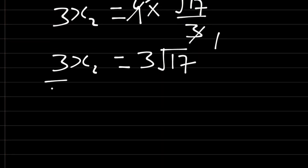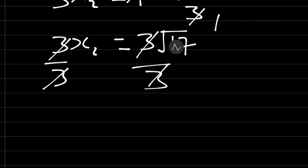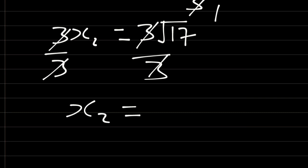Divide both sides by 3. We have over 3 over 3. 3, we cancel 3. Then we are left with x2 is equal to square root of 17.